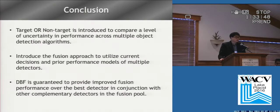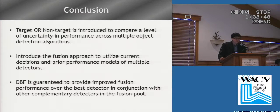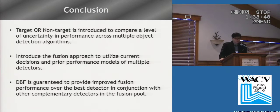In this paper, we introduced a target or non-target hypothesis to capture the level of uncertainty in performance across multiple object detection algorithms. We also introduced a fusion approach named dynamic belief fusion to utilize current decisions and prior performance models of multiple detectors. Our experiments demonstrate that DBF is guaranteed to always provide improved fusion performance over the best detector in conjunction with other complementary detectors in the fusion pool.